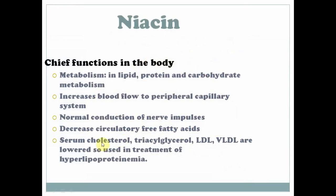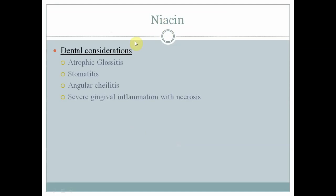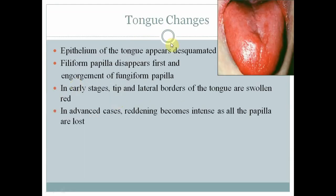Riboflavin deficiency is associated with seborrheic dermatitis and magenta-colored tongue. Vitamin B3, niacin, functions in nerve impulse transmission and free fatty acid circulation. Dental considerations include stomatitis, dermatitis, angular cheilitis, atrophic glossitis and severe gingival inflammation with necrosis. Tongue changes include discomfort in the epithelium, with filiform papillae disappearing first and enlargement of fungiform papillae. Early stages involve tip and lateral borders, which become swollen; advanced cases show severe reddening with loss of all papillae.